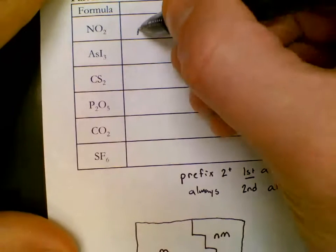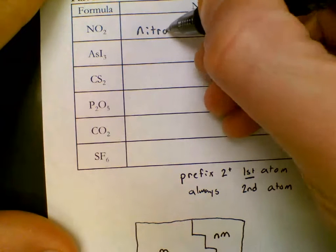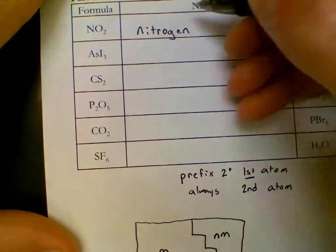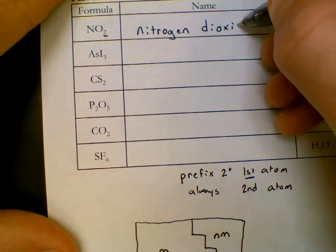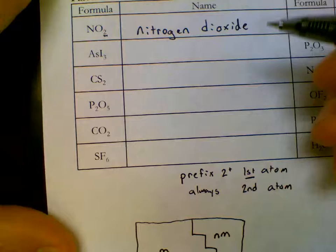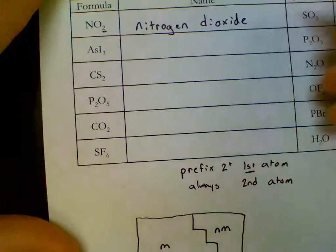So full first name, just like we did for ionic, nitrogen. But now we do care about that subscript, di oxide. So for half the names on the sheet we did not care about the subscript. The other half we do.